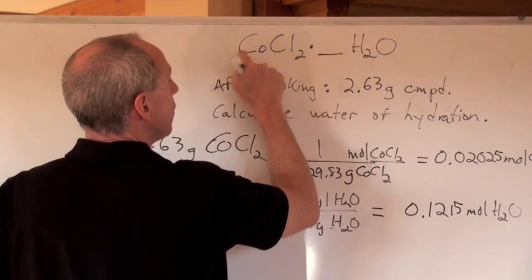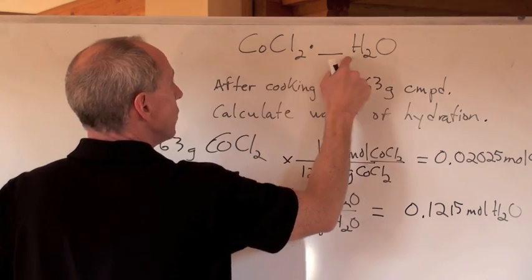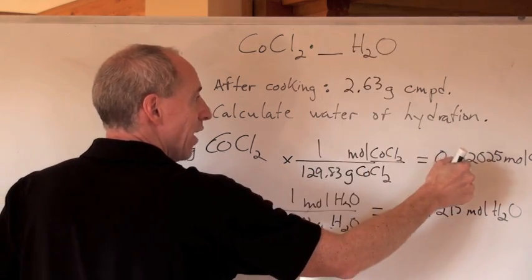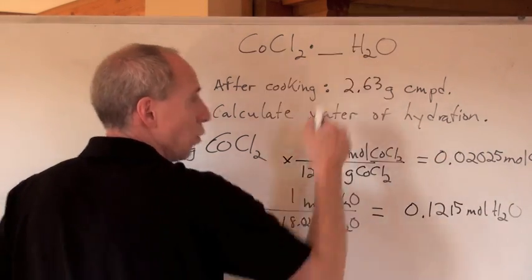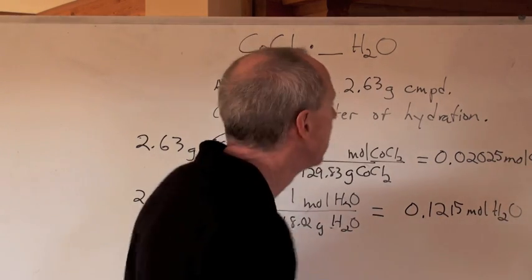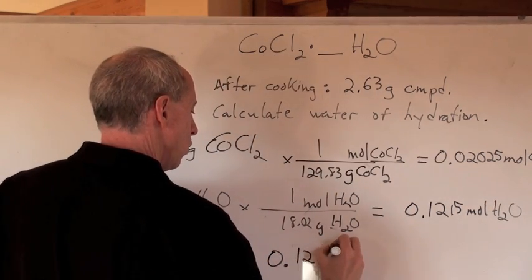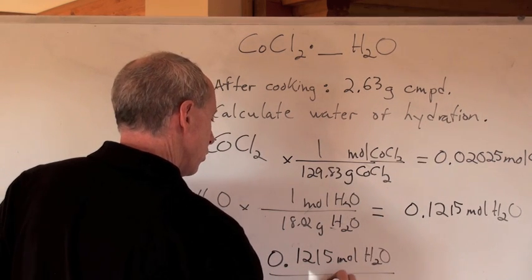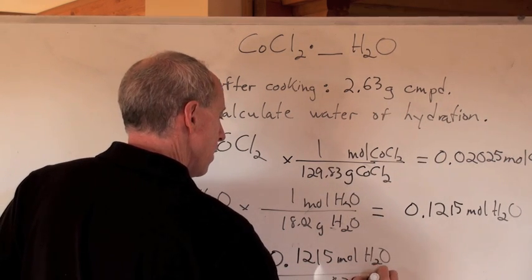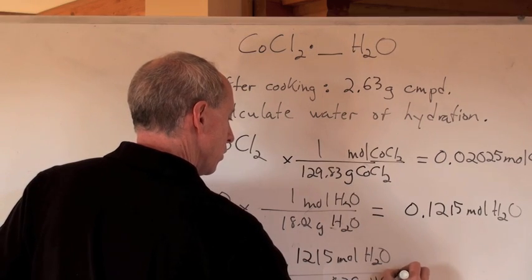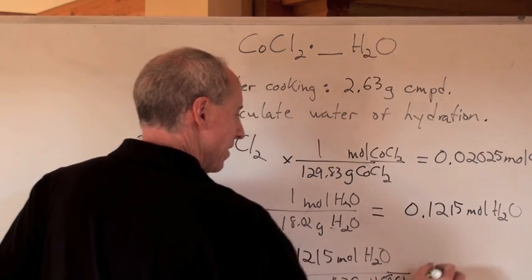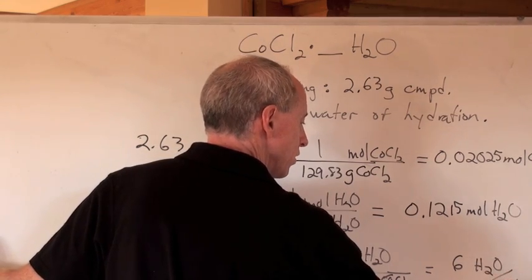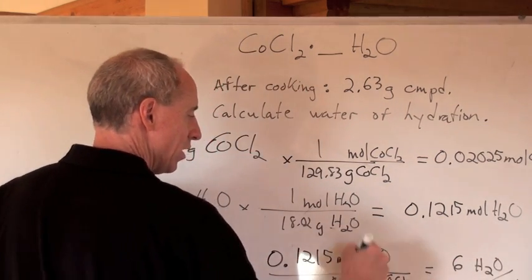The water number will always be higher in terms of moles, so you'll divide this one into this one, unless they're both the same, and then it's just 1 to 1. When you take 0.1215 moles of H2O and divide it by 0.02025 moles of CoCl2, the ratio of that to that is 6 waters to 1 CoCl2. That's the ratio that you get here.